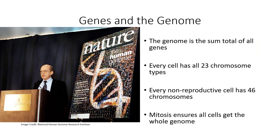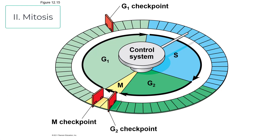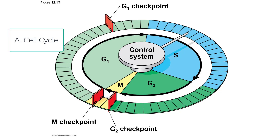Every non-reproductive cell has all 23 chromosome types, meaning 46 chromosomes. Sperm and eggs actually only have 23 chromosomes, which makes sense when you think about inheritance. Mitosis is a process that ensures all cells get the whole genome. Let's look at a cell and a cell cycle — basically, the cell has a lifetime.